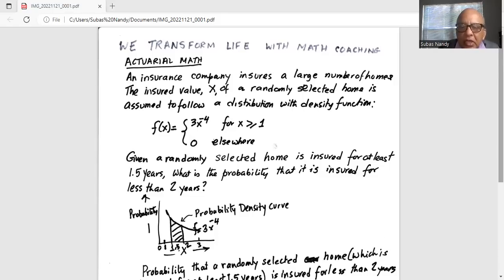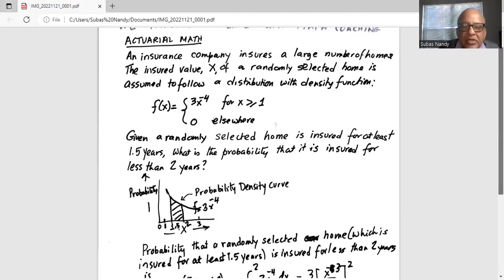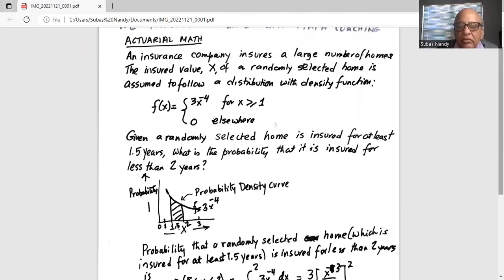So we have the probability density curve 3 multiplied by x minus 4. So we are going to find the probability that a randomly selected home which is insured for at least 1.5 years is insured for less than 2 years.